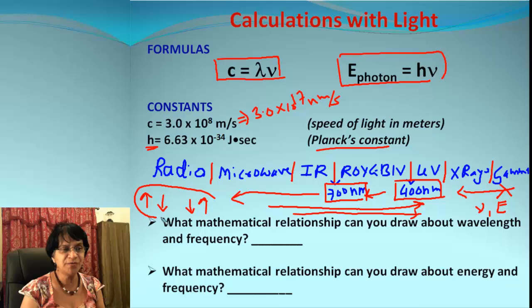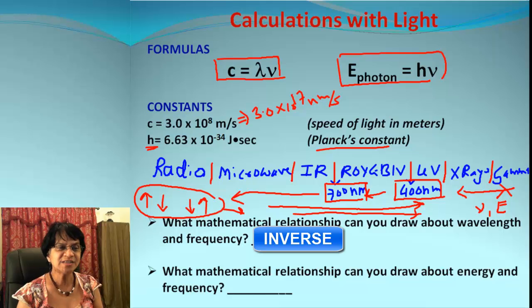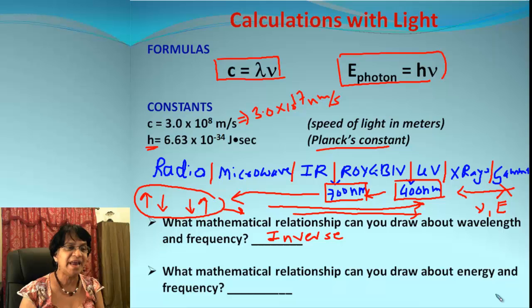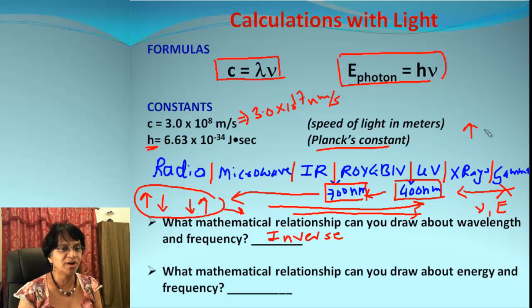The next question is: what mathematical relationship can we draw between energy and frequency? Look carefully—energy and frequency both are going from left to right. That means if one goes up, second goes up, or one goes down, second one goes down too. That means this is a direct relationship.